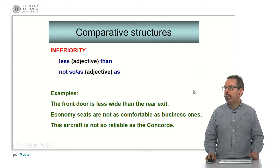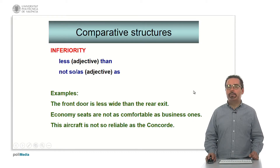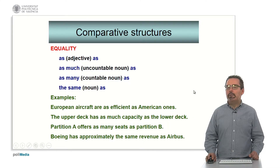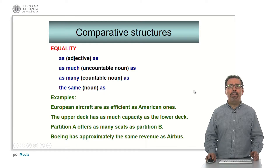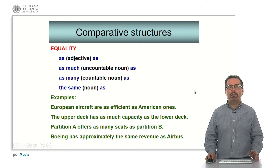Here we have examples. 'The front door is less wide than the rear exit.' 'Economy seats are not as comfortable as business ones.' Or, 'This aircraft is not so reliable as the Concorde.' When talking about equality, we normally use 'as' plus the adjective plus 'as'. And if in the middle we use a noun, we must include 'much' with uncountable or 'many' with countable nouns.